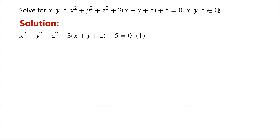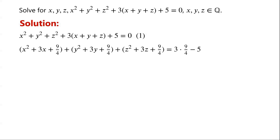So equation one can be written as: x squared plus three x plus nine over four, plus y squared plus three y plus nine over four, plus z squared plus three z plus nine over four, equals three times nine over four, minus five.